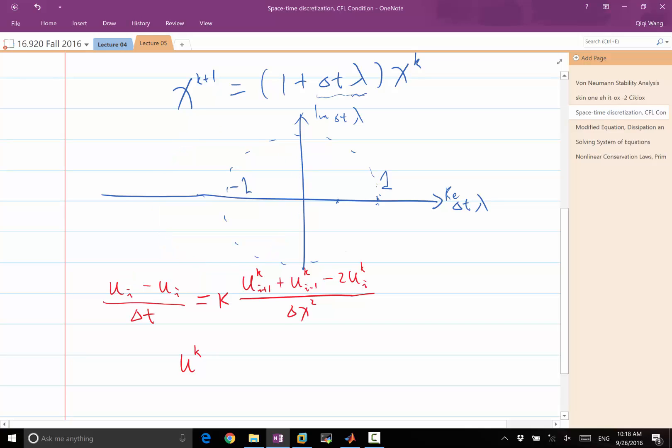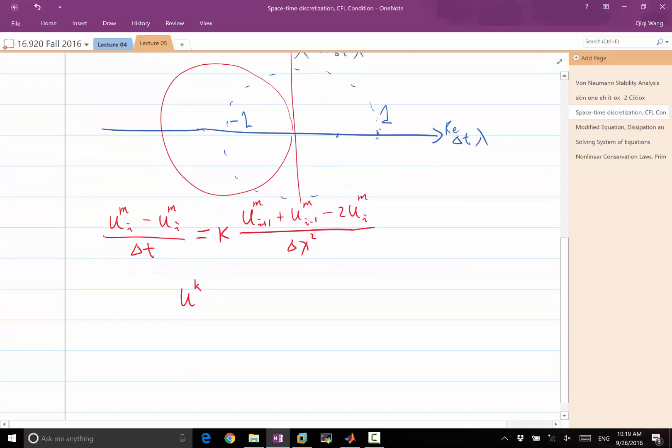This is the stability region. Once we use m, we can say that u_m of i is equal to summation of k.